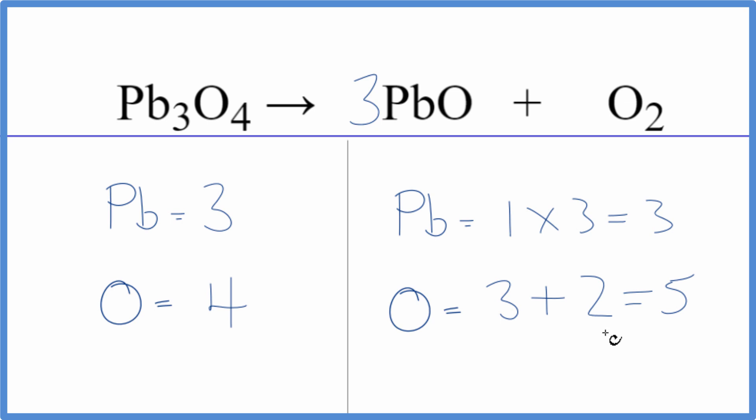The way to deal with this is probably just to double this number here, and that'll give us an even number. So instead of 3, let's make this 6. And now we need to update these numbers. So we have 6 times 1, 6 lead atoms, and then 6 times 1, 6, plus the 2. That'll give us 8 oxygen atoms.